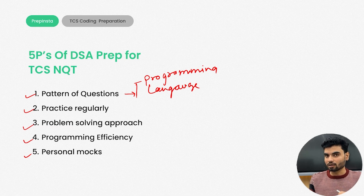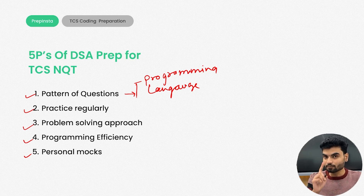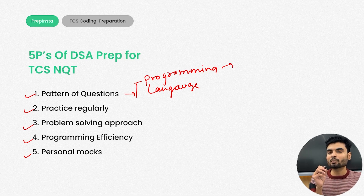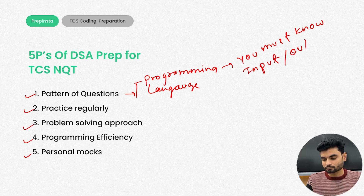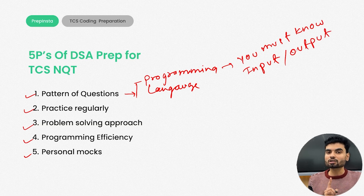One important thing: how you will take the input and how you will give the output. In TCS, how you write code for taking input from the user is very important. So if you know a particular programming language and want to code in it, you must know the input and output way — that's the first thing.